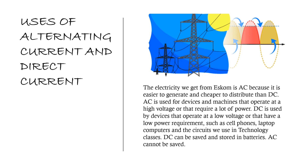The electricity we get from ESCOM is AC because it is easier to generate and cheaper to distribute than DC. AC is used for devices and machines that operate at a high voltage or that require a lot of power.